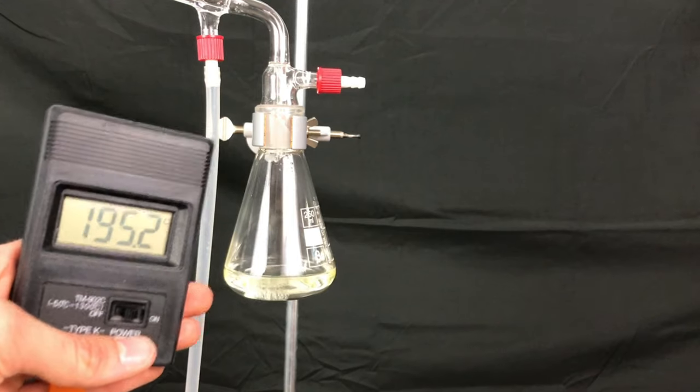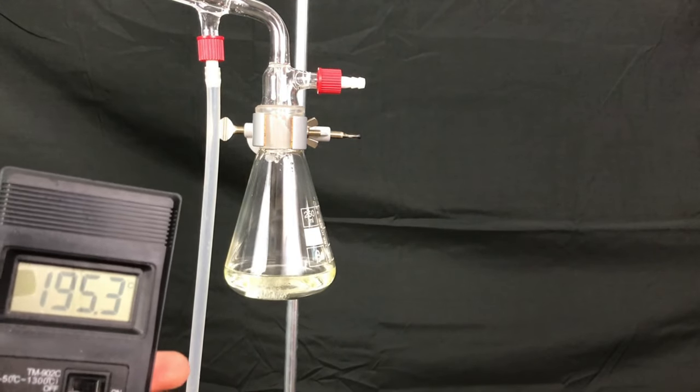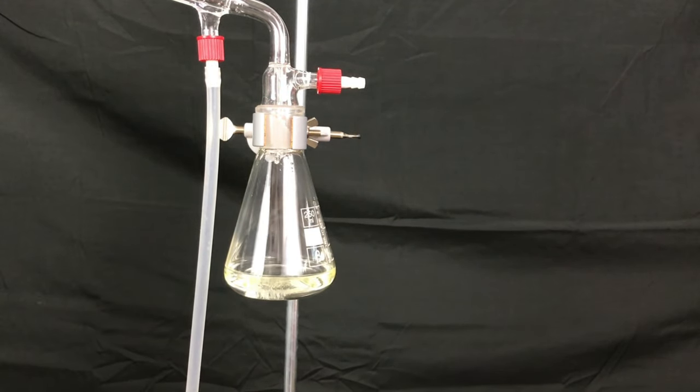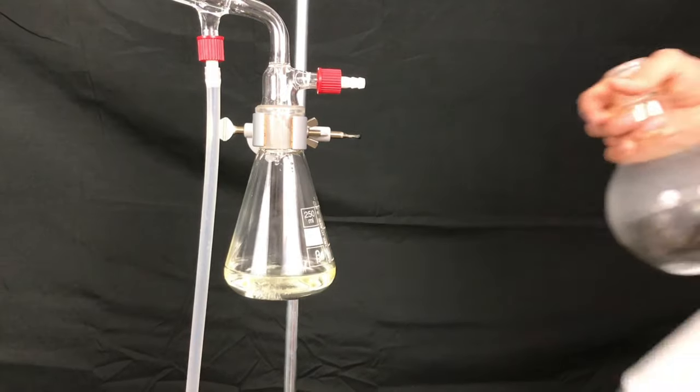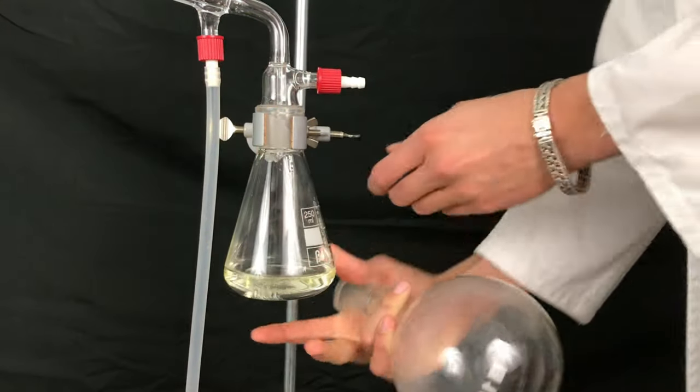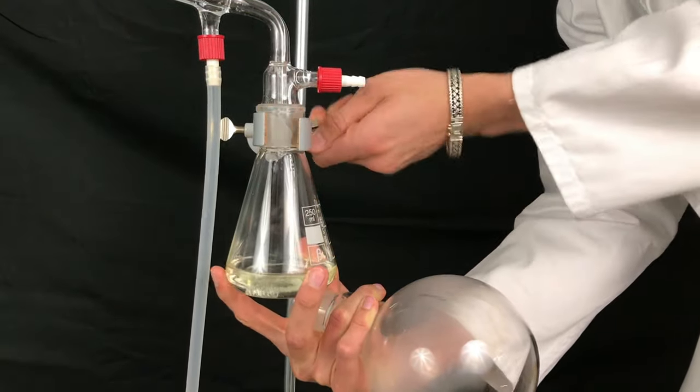When I reached the target temperature when ethylene glycol should start to boil I decided to swap out the flasks. At this point there should only be ethylene glycol coming over and this should be pretty pure.